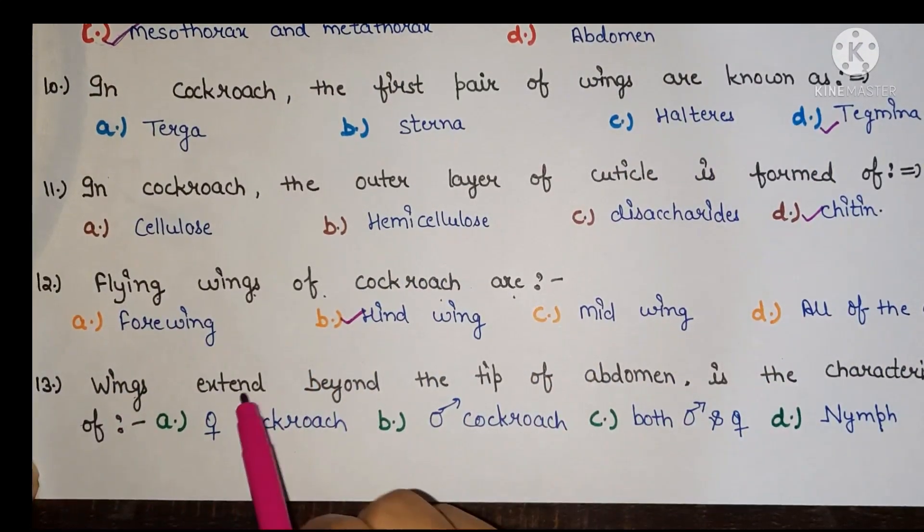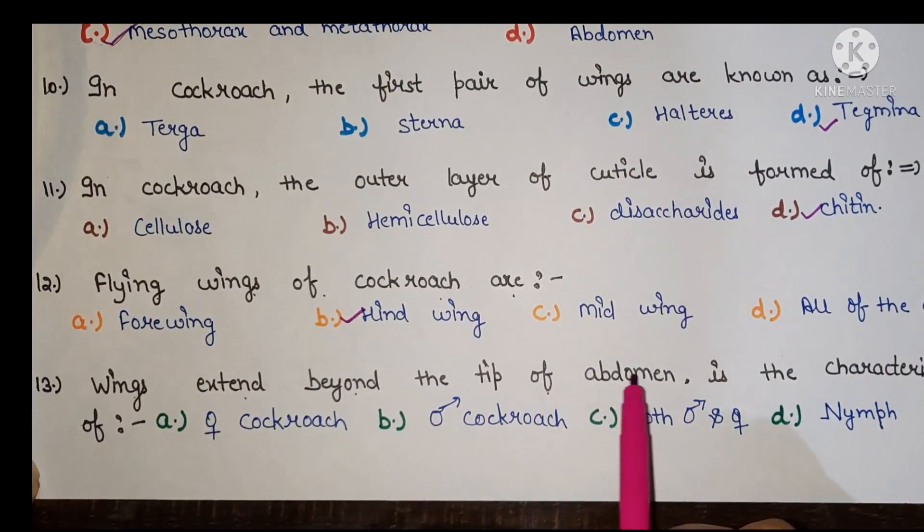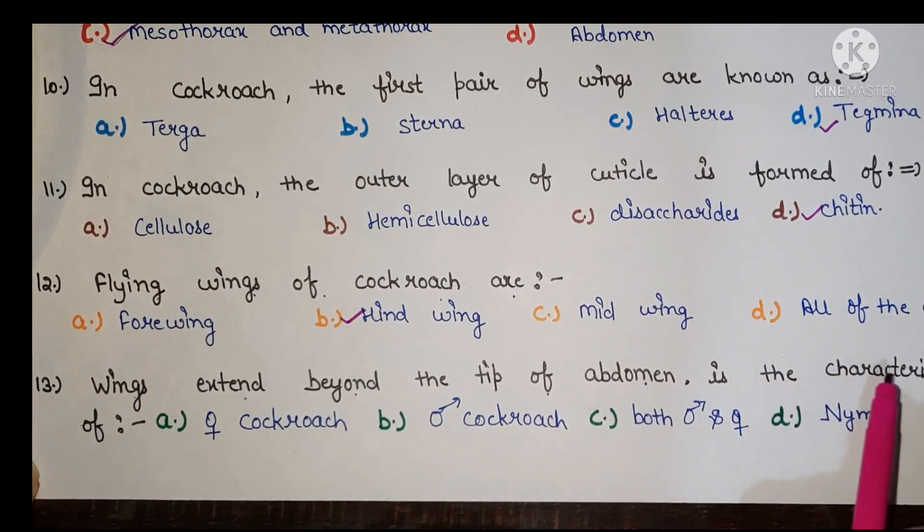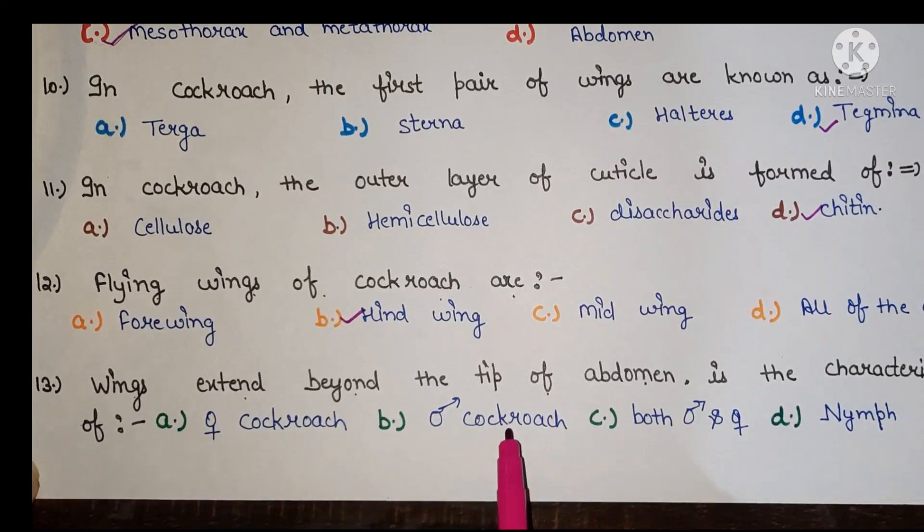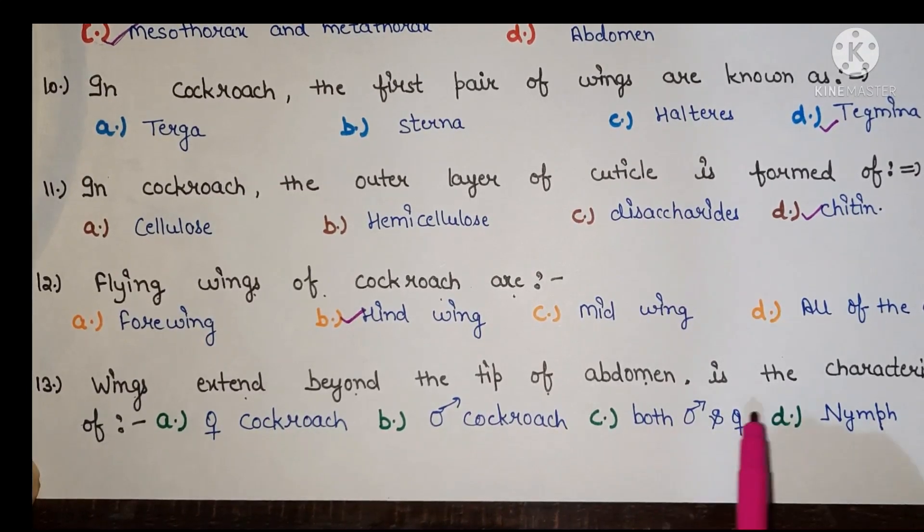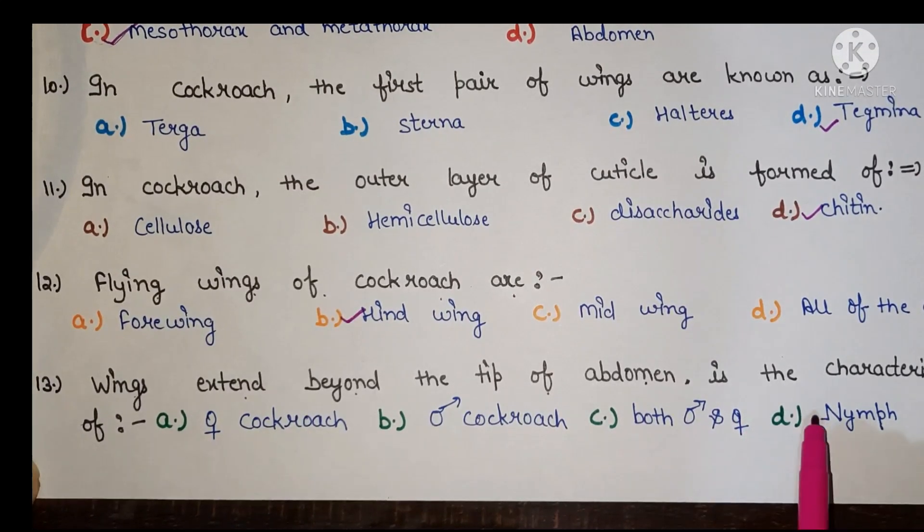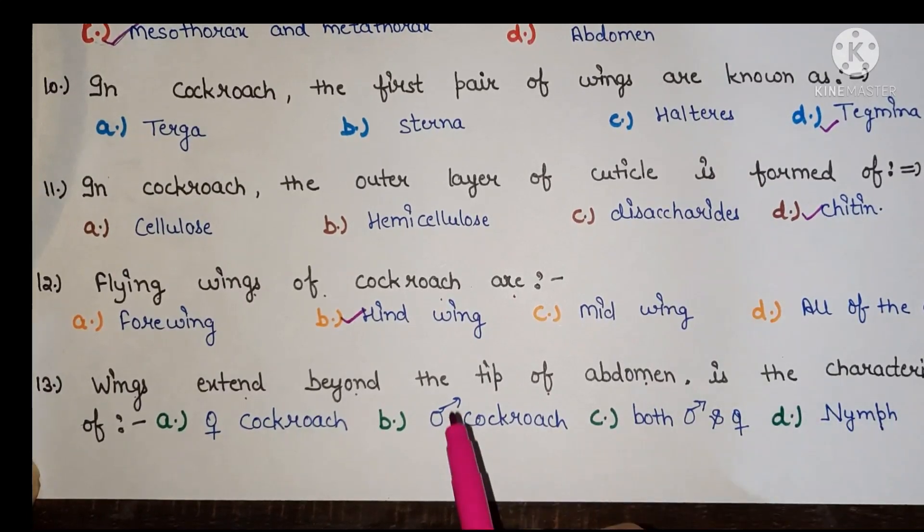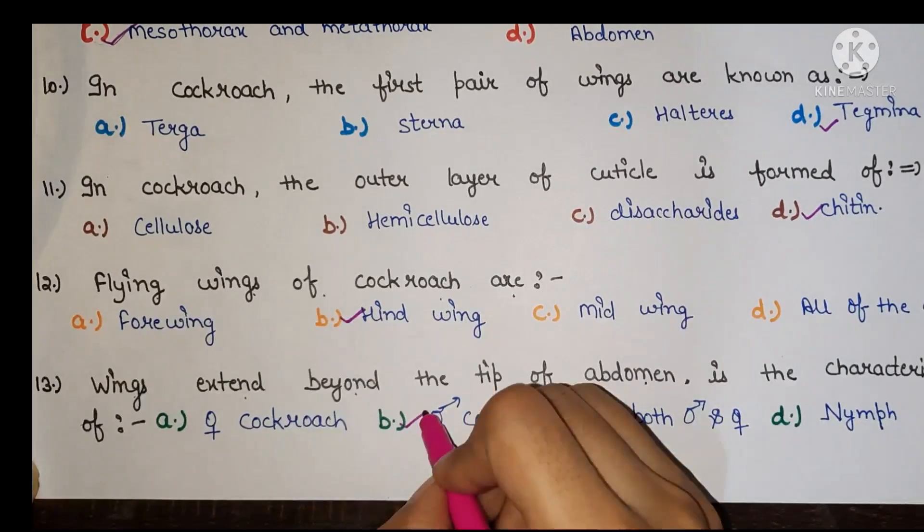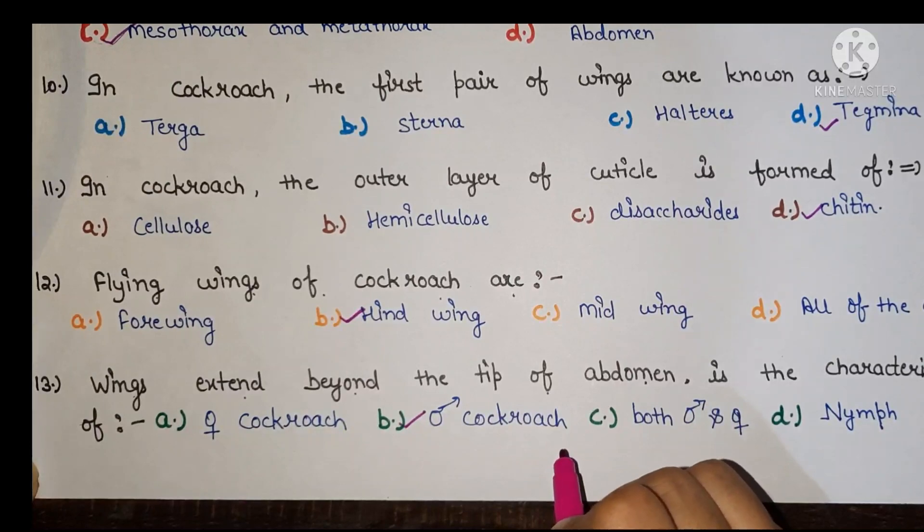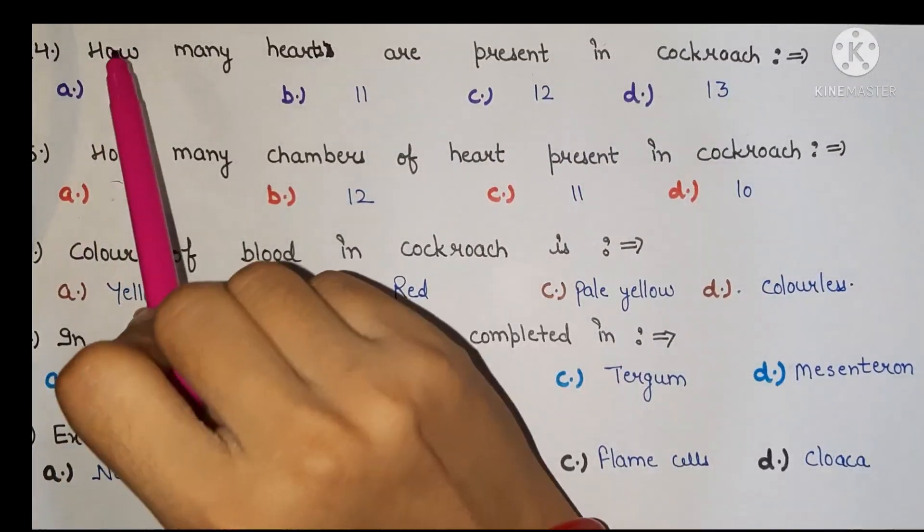Next, wings extend beyond the tip of abdomen is the characteristic of female cockroach, male cockroach, both female and male cockroach, D nymph. The right answer is B, male cockroach. Next point is,